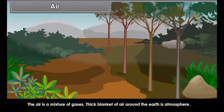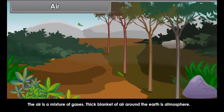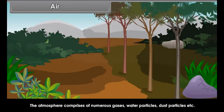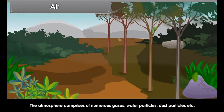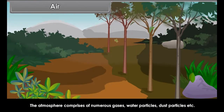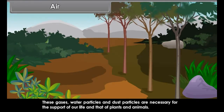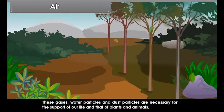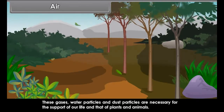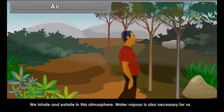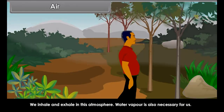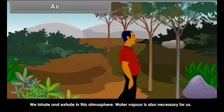The air is a mixture of gases. The thick blanket of air around the earth is called the atmosphere. The atmosphere comprises of numerous gases, water particles, and dust particles. These gases, water particles and dust particles are necessary for the support of our life and that of plants and animals. We inhale and exhale in this atmosphere. Water vapour is also necessary for us.